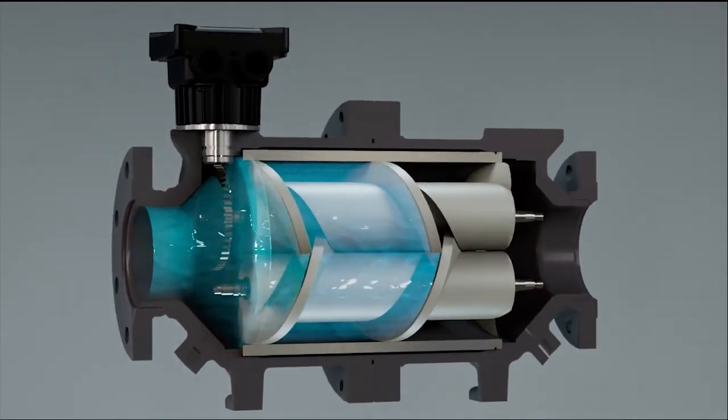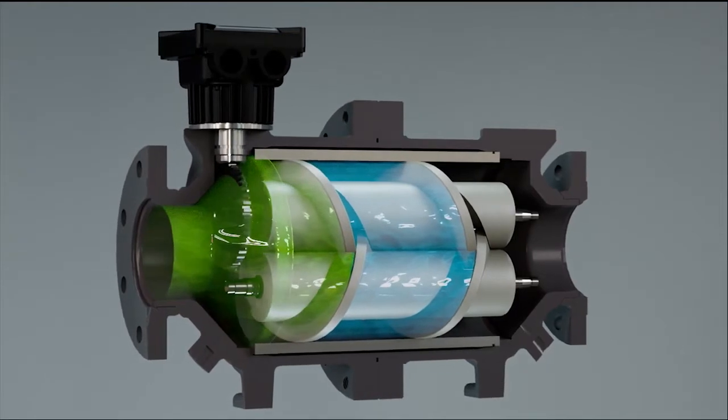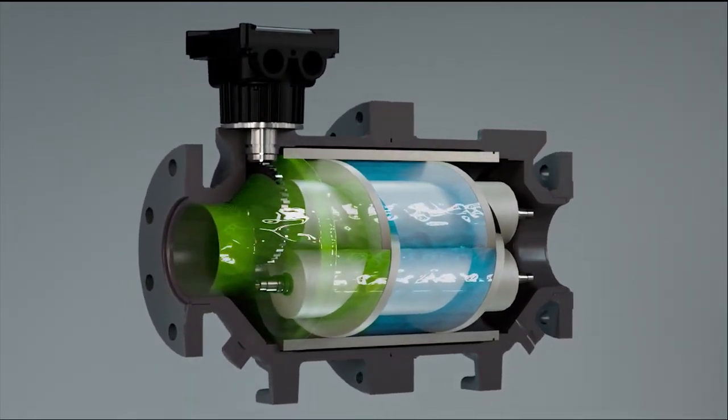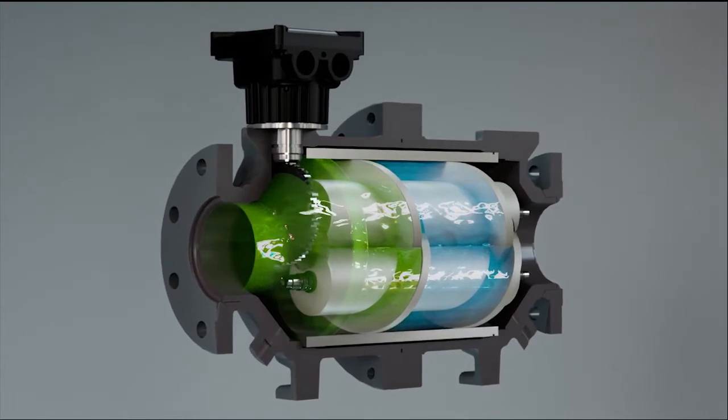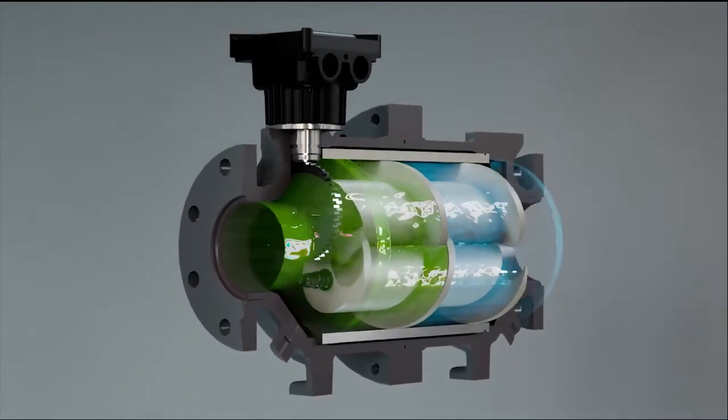As they turn, a defined volume of liquid becomes enclosed between the teeth. When this section opens, another closes, allowing the next defined volume to pass through the meter.